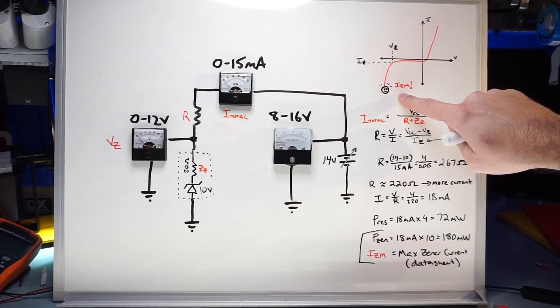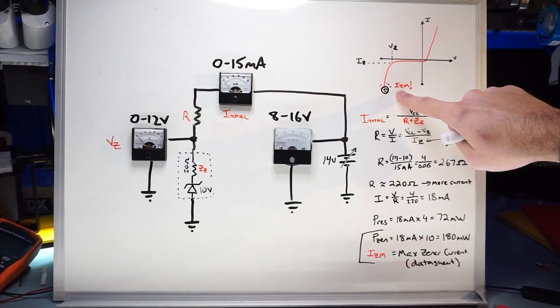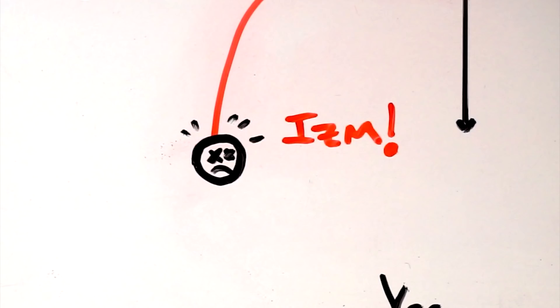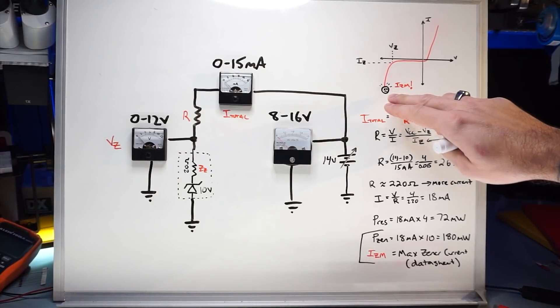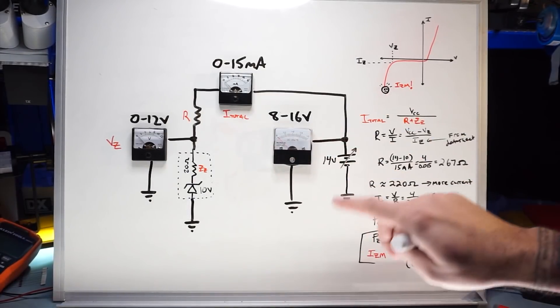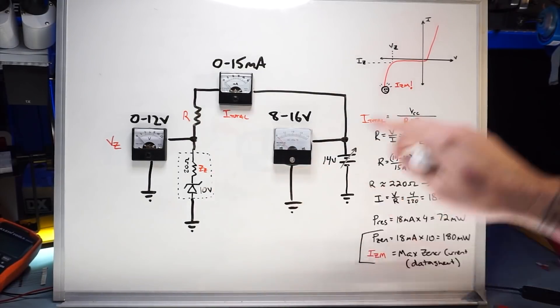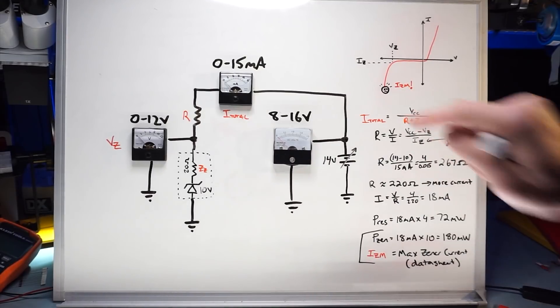We also want to avoid IZM, which is the maximum Zener current from the datasheet. That could also be catastrophic. And we also want to not exceed the power rating of the diode itself. So this one in particular is half a watt. So any calculations that we do with voltage and current here cannot exceed half a watt.